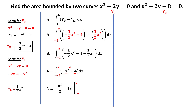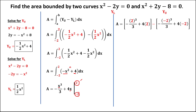Substituting the upper limit first: negative 2 cubed over 3 plus 4 times 2. This gives negative 8 over 3 plus 8. Then substituting the lower limit x equals negative 2: negative (negative 2) cubed over 3 plus 4 times negative 2. Negative 2 cubed is negative 8 over 3, and 4 times negative 2 is negative 8.